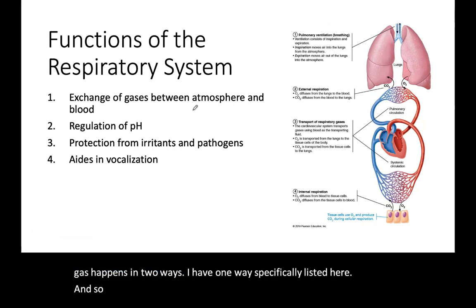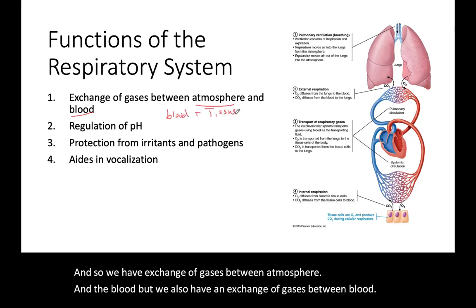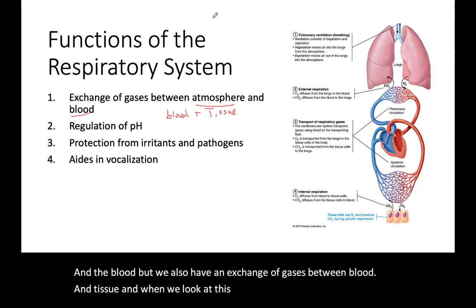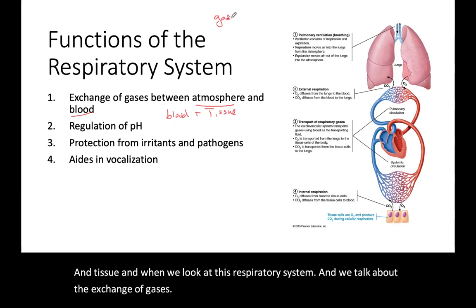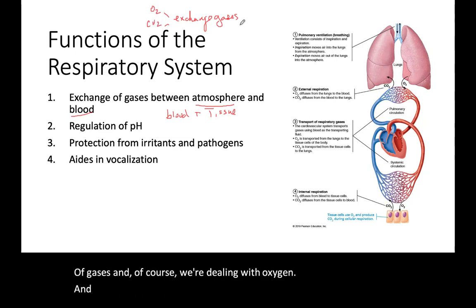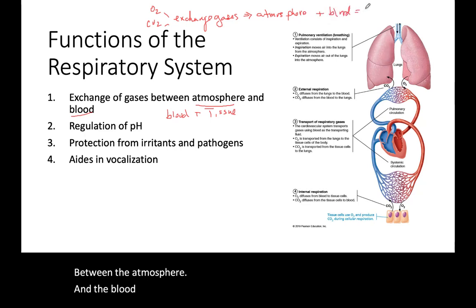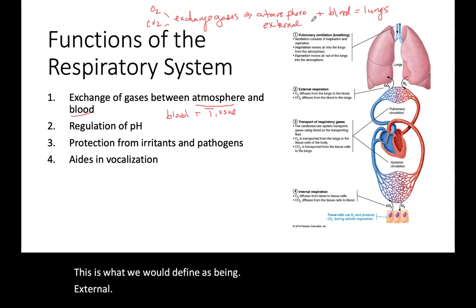We have an exchange of gas between the atmosphere and the blood, but we also have an exchange of gases between blood and tissue. When we talk about the exchange of gases — oxygen and carbon dioxide — if that exchange is happening between the atmosphere and the blood, this is occurring in the lungs. This is what we define as external respiration.